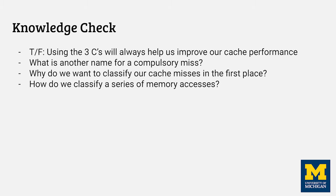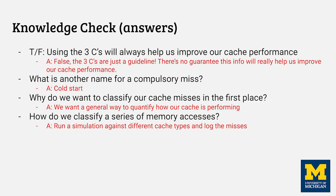Here's a quick check — go ahead and pause the video and give it a try. The first question is false, because the three Cs are guidelines and not hard and fast rules. The second question is just a synonym — cold start and compulsory miss are the same thing. The third question is asking why we're doing all this in the first place, and the answer is to get some performance metrics. The way that we actually use the three Cs is to run some simulations.